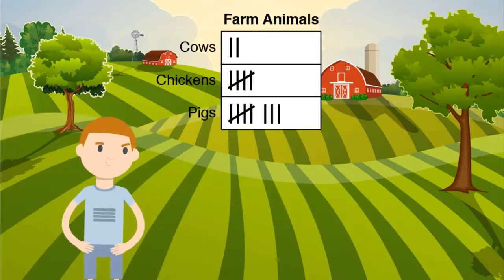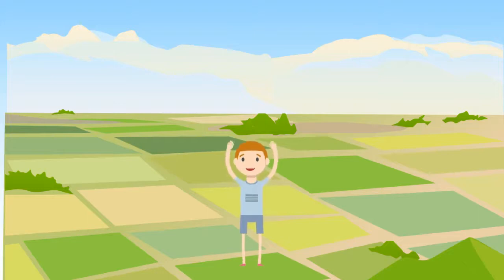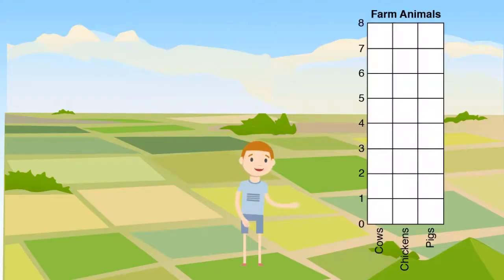The last graph we will go over is a bar graph. A bar graph shows our data with bars. Look at this bar graph. This bar graph also has a title and categories. Notice the numbers on the side. These numbers show us the number of each animal. We color above each category to show the number.